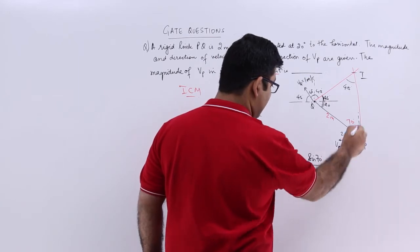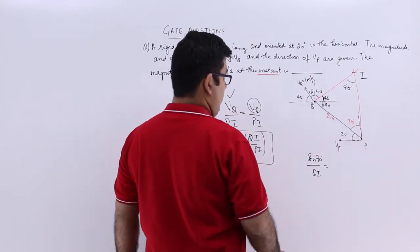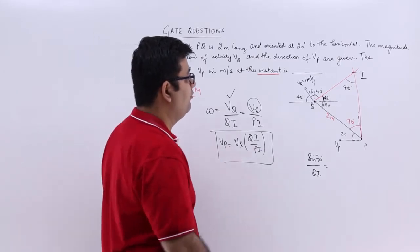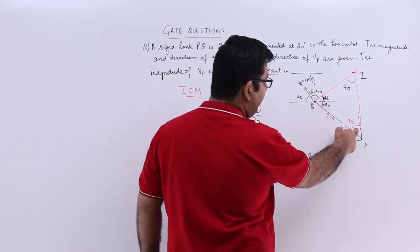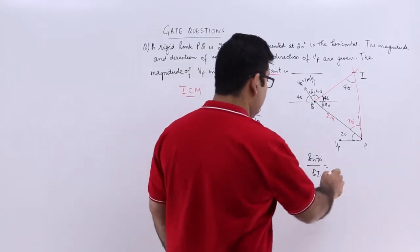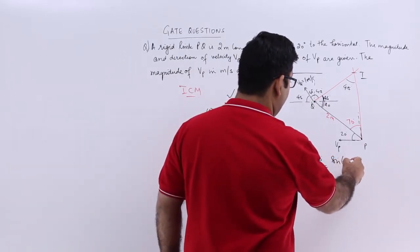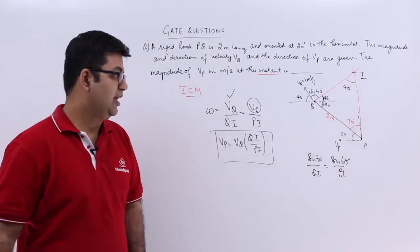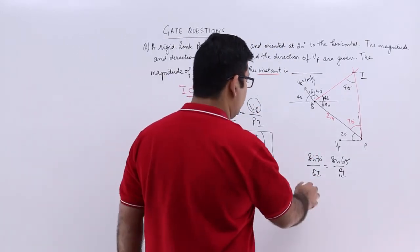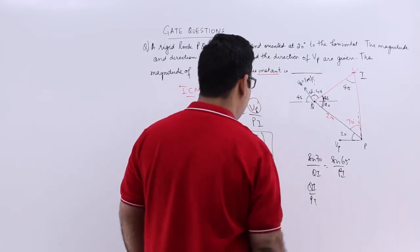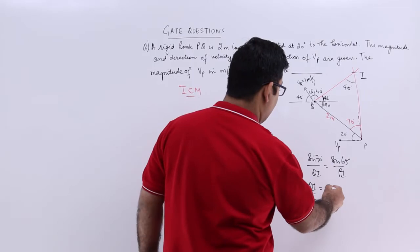I need qi and pi, so for qi the opposite angle is 70, for pi the opposite angle is 65. So I will write sine 65 by pi, and from this I can get a ratio of qi by pi which would be sine 70 by sine 65.